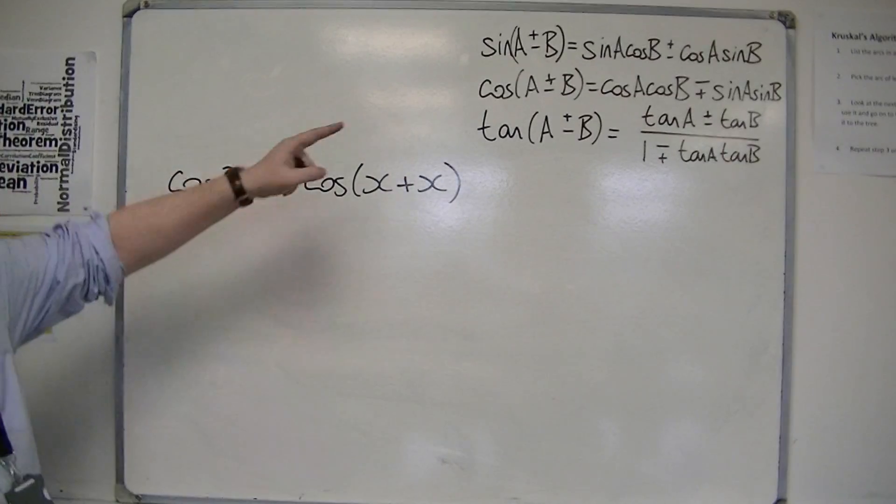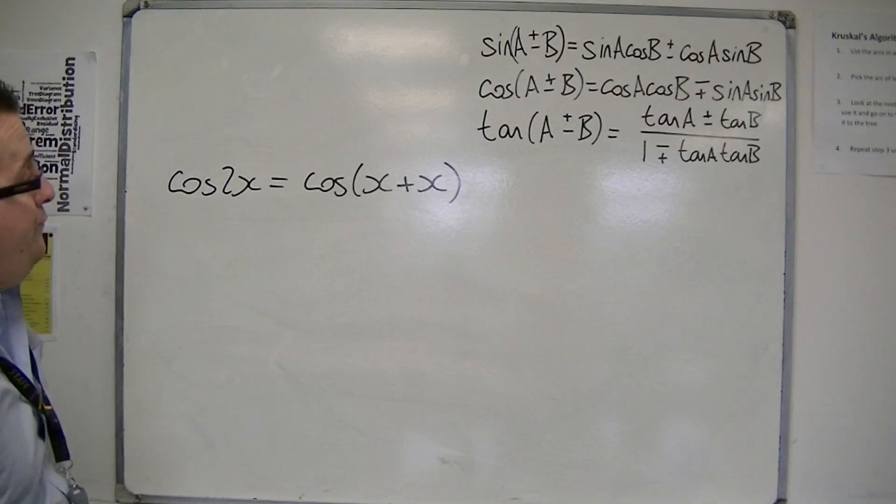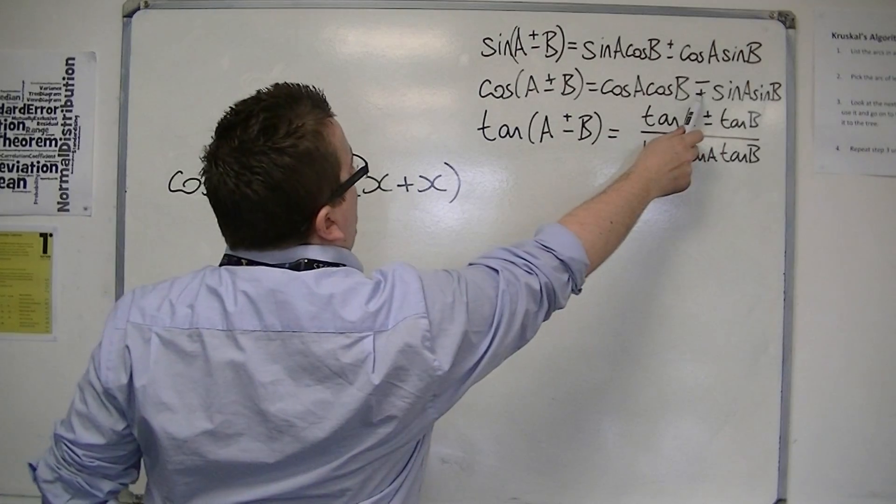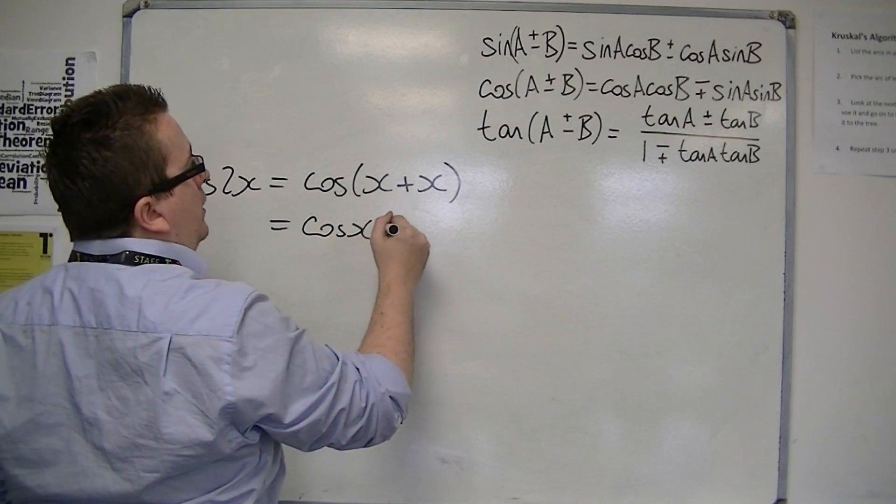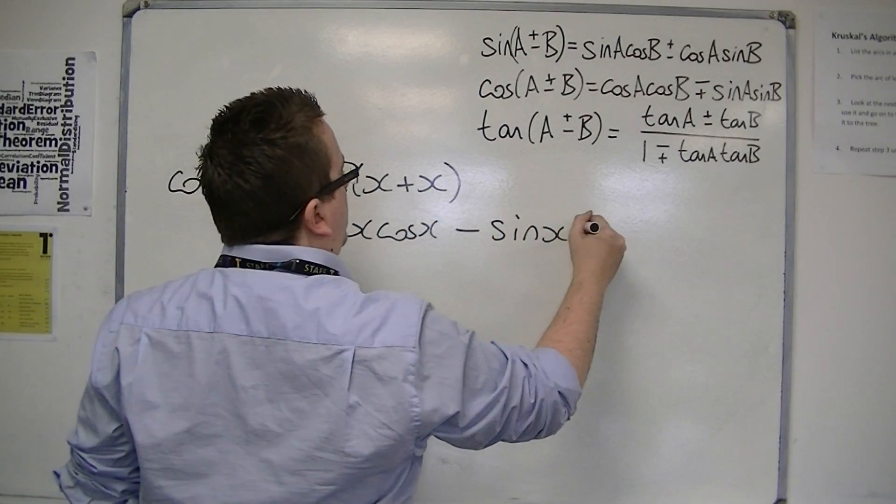So if we look at the cos formula, cos of a plus or minus b, then a is x and b is x, and that's plus, so that needs to be minus. So this is cos x cos x minus sin x sin x.